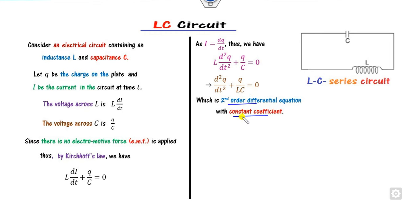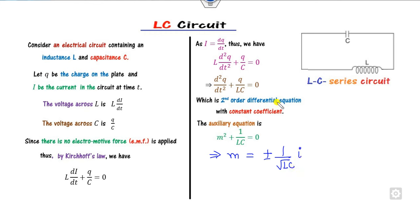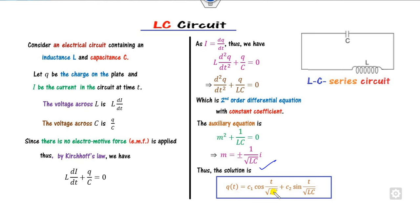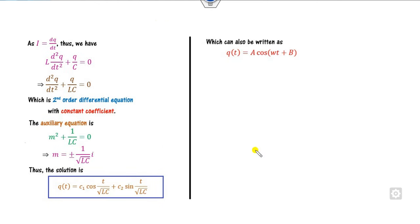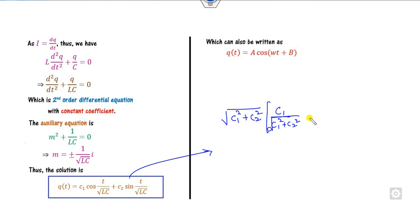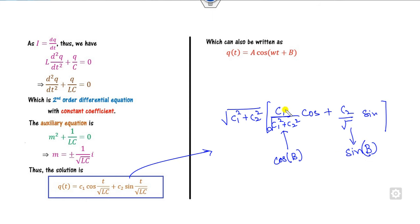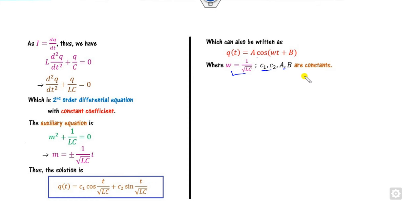To solve this second-order differential equation with constant coefficients, write the auxiliary equation: m² + 1/LC = 0. The value of m is ±(1/√LC)·i. Writing the solution in terms of this, we can express it as C1·cos(ωt) + C2·sin(ωt), or equivalently as A·cos(ωt − B), using the identity cos A·cos B + sin A·sin B = cos(A − B).